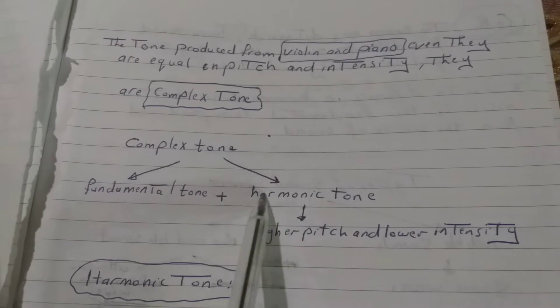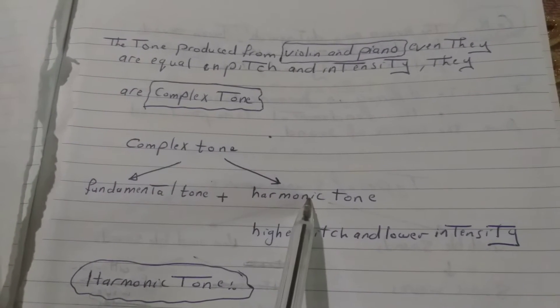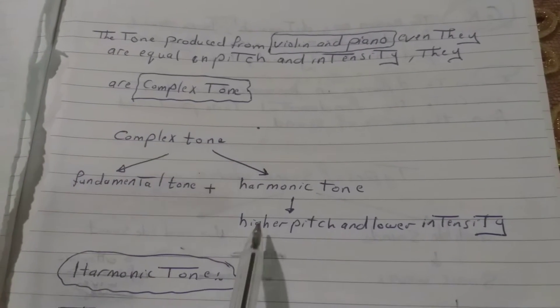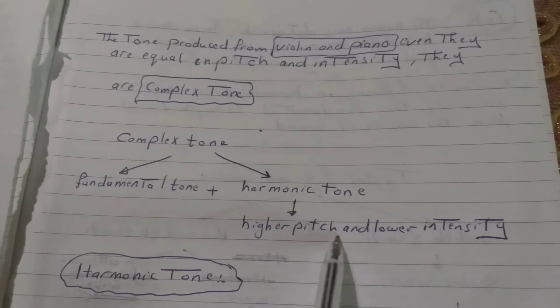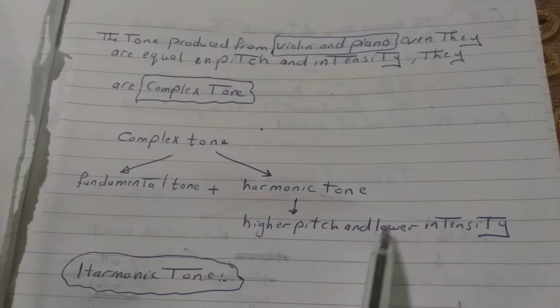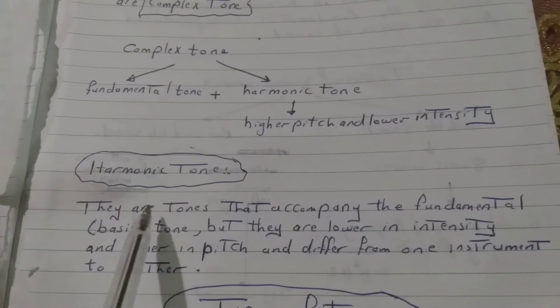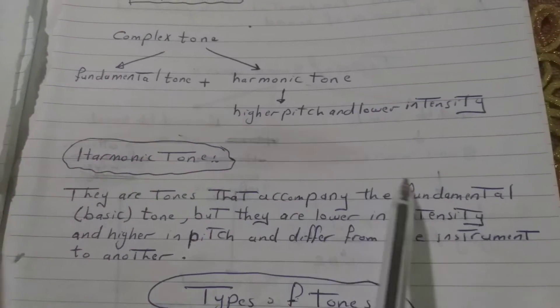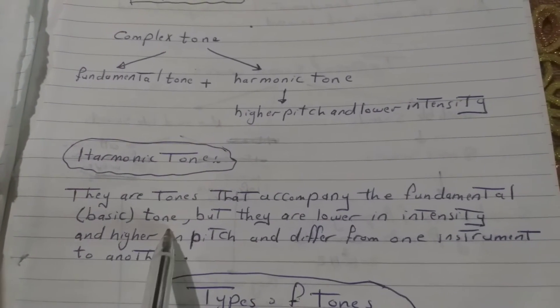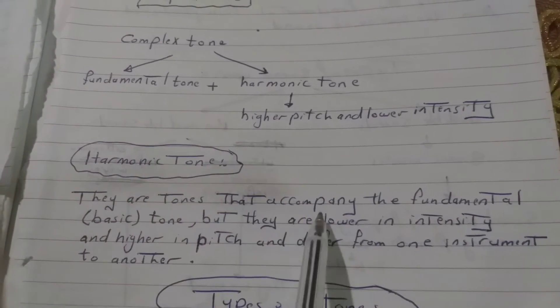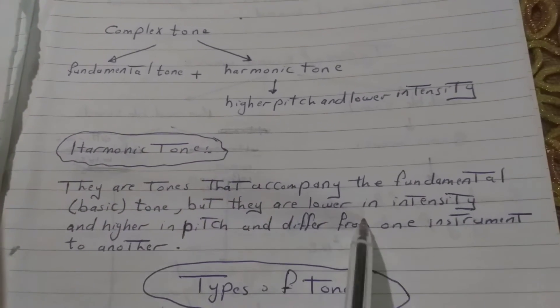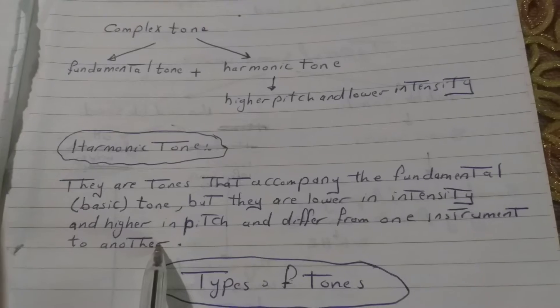What is the harmonic tune, and what is the difference between harmonic tune and fundamental tune? The harmonic tune is higher in pitch and lower in intensity. Harmonic tunes are tunes that accompany the fundamental or basic tune, but they are lower in intensity and higher in pitch, and they differ from one instrument to another.